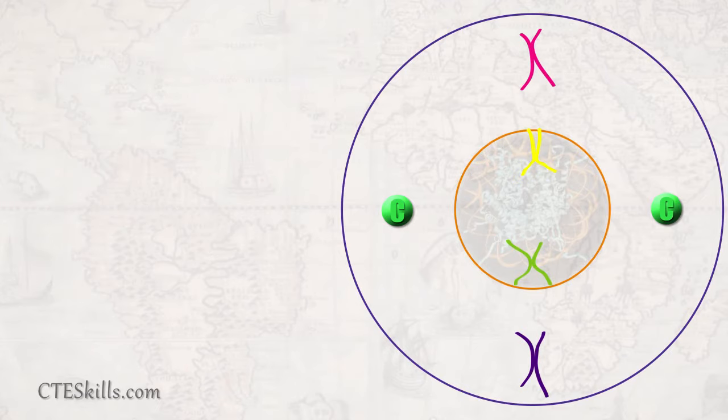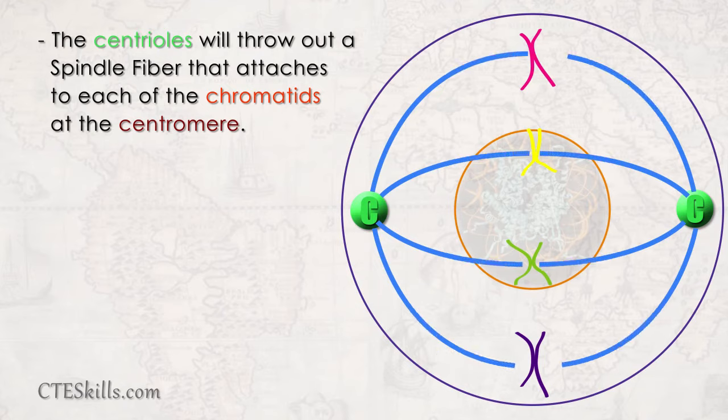Meanwhile, the centrioles, who have finally reached their destination at the opposite ends of the cell, will throw out spindle fibers like streamers that attach to each of the chromatids at the centromere.